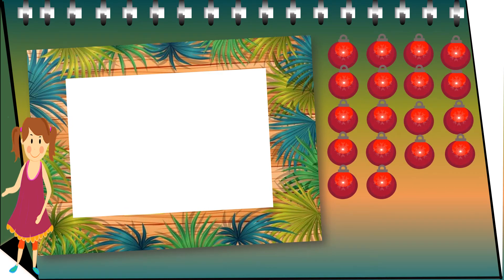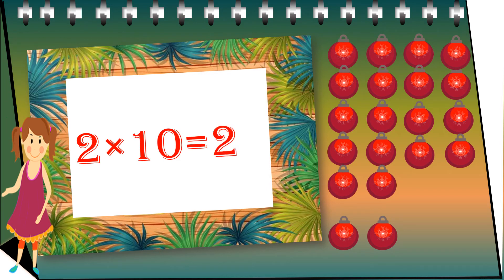So Sara, one last time — now you have eighteen balls. Add two more balls to it. Twenty! That's correct. Two tens are twenty — you added two ten times. I hope now you understood how we derived this table. Multiplication is nothing but repetitive addition. Yes, I got it now!